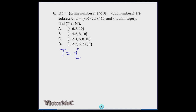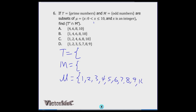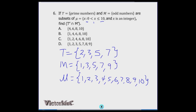Number six: T is the set of prime numbers and M is the set of odd numbers, both subsets of the universal set — integers x where 0 < x ≤ 10. The universal set is {1, 2, 3, 4, 5, 6, 7, 8, 9, 10}. T (primes) = {2, 3, 5, 7}; M (odd numbers) = {1, 3, 5, 7, 9}.